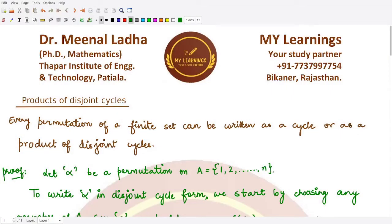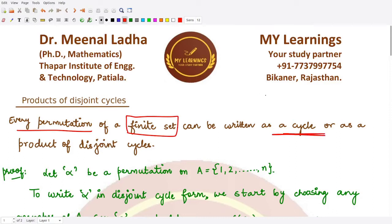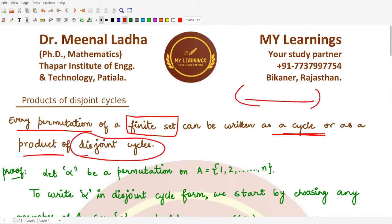Hello everyone, welcome to this video. We'll be talking about the result which is based on the product of disjoint cycles. This result tells us that every permutation of a finite set can be written as either a complete cycle or as a product of disjoint cycles, where the cycles do not have any element in common with each other.